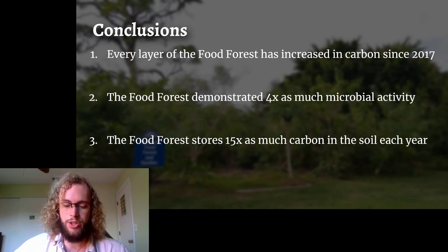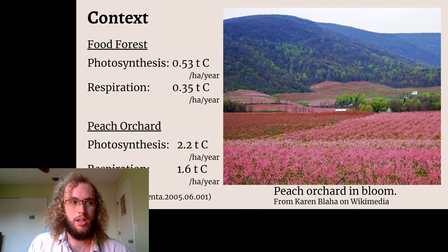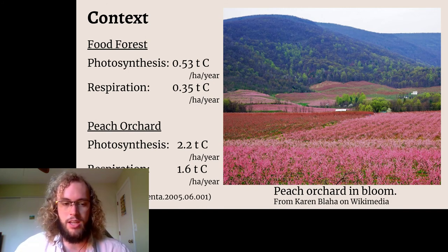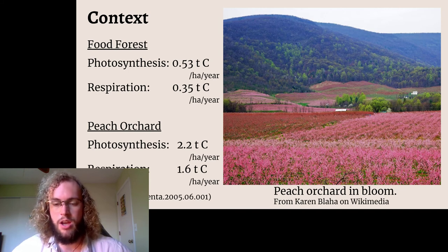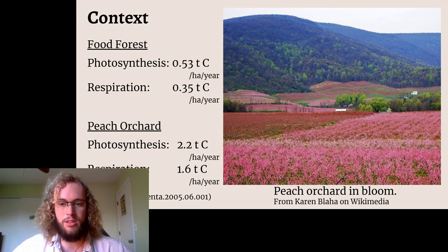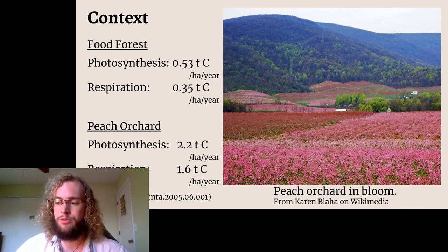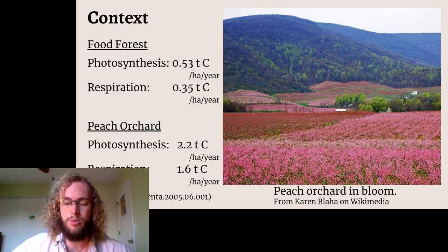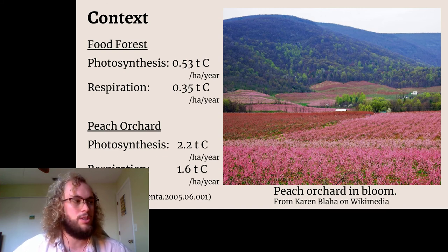Now that I had these numbers, I was curious how they compared to some other sort of agricultural orchard system. I found a study about a peach orchard in Italy and found that the peach orchard was able to store about four times as much carbon through photosynthesis as the food forest, while it released about five times as much carbon as the food forest. So it seems, similar to the example with the food forest and the lawn, that the peach orchard is both intaking more carbon dioxide and releasing more carbon dioxide each year than the food forest. I think that the food forest will show an increase in the amount of carbon it is able to sequester as it becomes older, since right now it's only about four years old and is still considered a relatively young orchard.